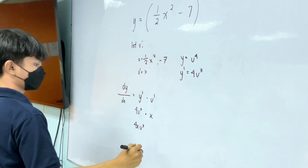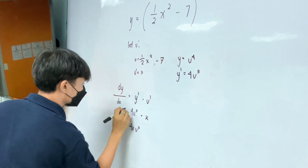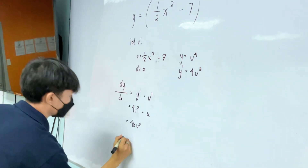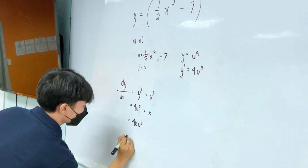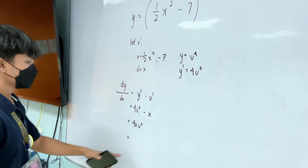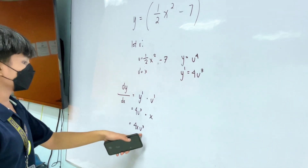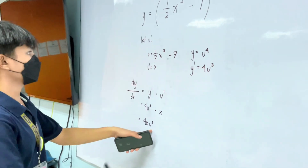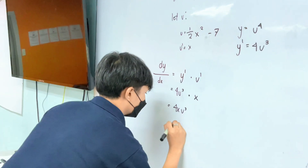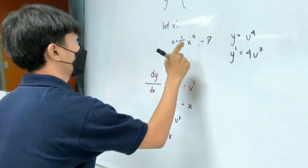Lagyan mo ng equal sign. And then, last step natin is i-substitute natin kung ano yung value ng u. Nagiging 4x — ano yung value ng u?